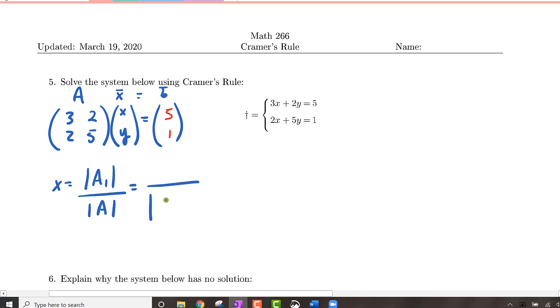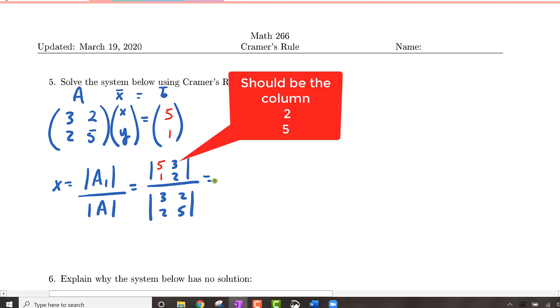So what does this notation mean? Well, the determinant of A is simply the determinant of 3, 2, 2, 5 and the determinant of A1 is the determinant of the same coefficient matrix A except we're going to replace, in this case, the first column with the column vector b. So that gives us 5, 1, 3, 2. If we compute this, let's see here, the determinant of the denominator would be 3 times 5 minus 2 times 2. So that gives us a determinant of 11 for that denominator. We'll use that again.